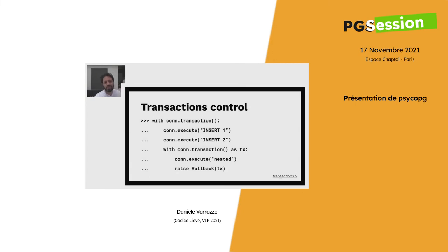Transaction control is something that has been improved a lot in Psycopg 3, especially because Psycopg 2 was born at a time when the `with` statement didn't even exist. In Psycopg 3, you can control transactions in a very visual way: code that is indented inside a block is executed within the same transaction. If there is any error inside the block, the entire transaction is automatically rolled back, and when the block exits, the transaction is committed. Transactions can also be nested automatically using savepoints.